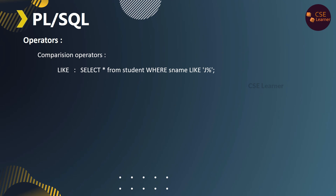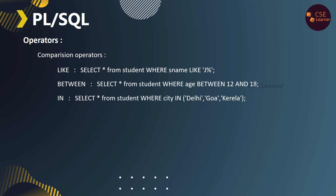The comparison operators include: LIKE, BETWEEN, IN, and IS. The LIKE operator is used for pattern matching. For example, if you have a student name starting with J, you can write: SELECT * FROM student WHERE name LIKE 'J%'. The J% means names starting with J, so students with names starting with J, R, M, K, L, or N would match.